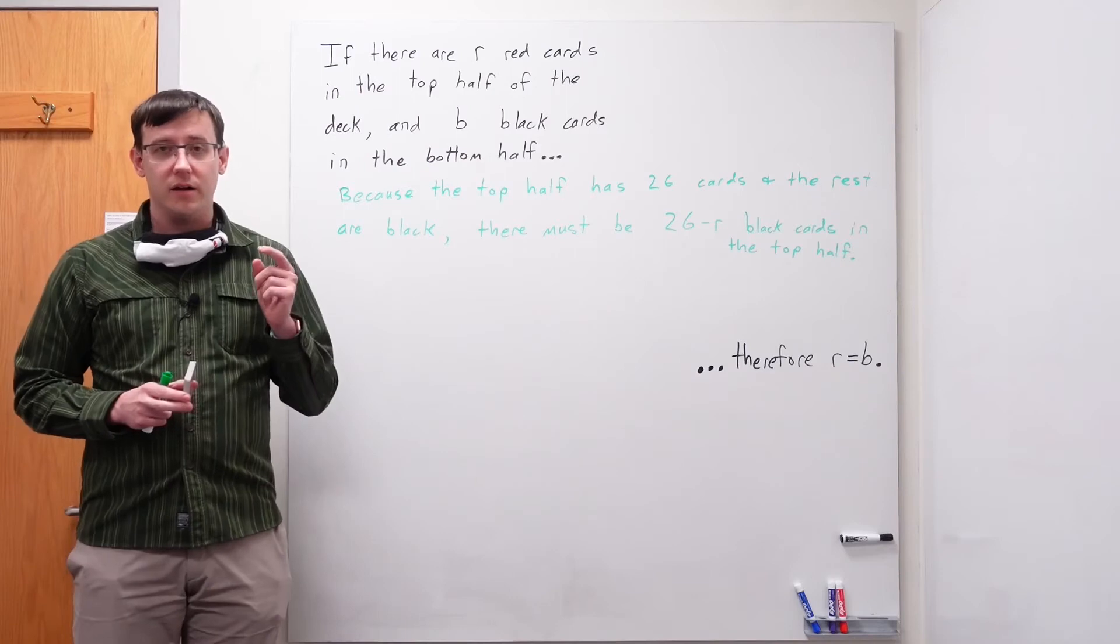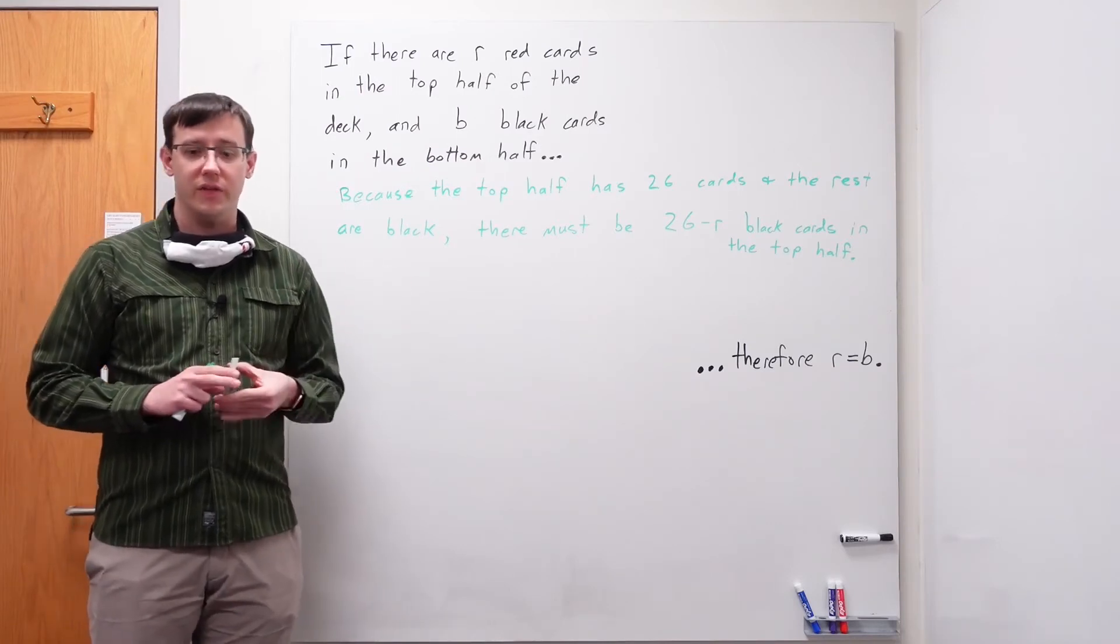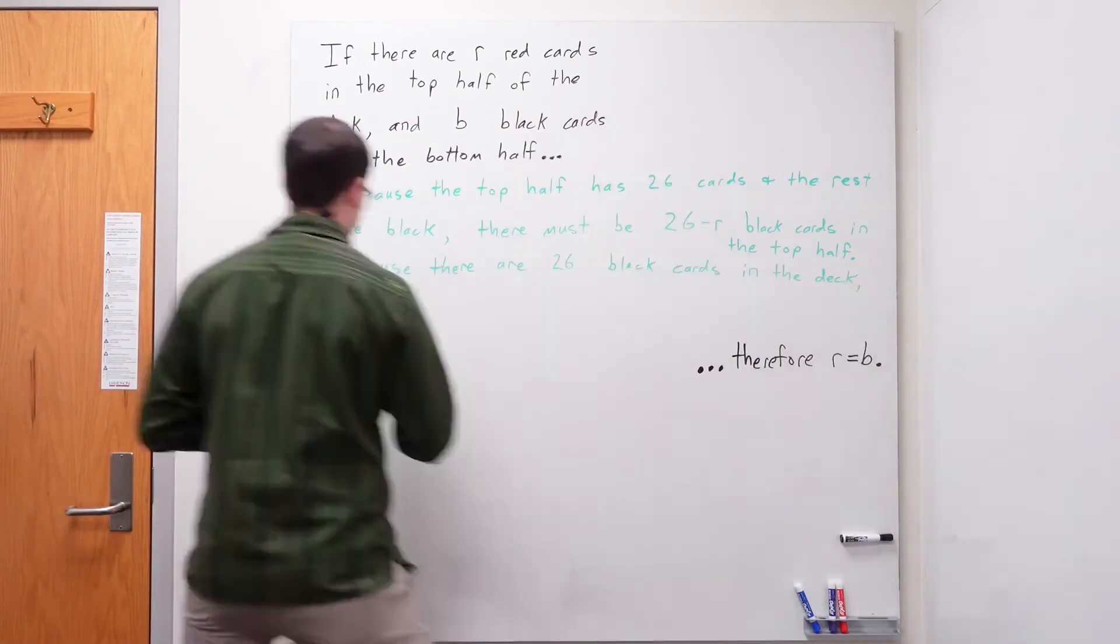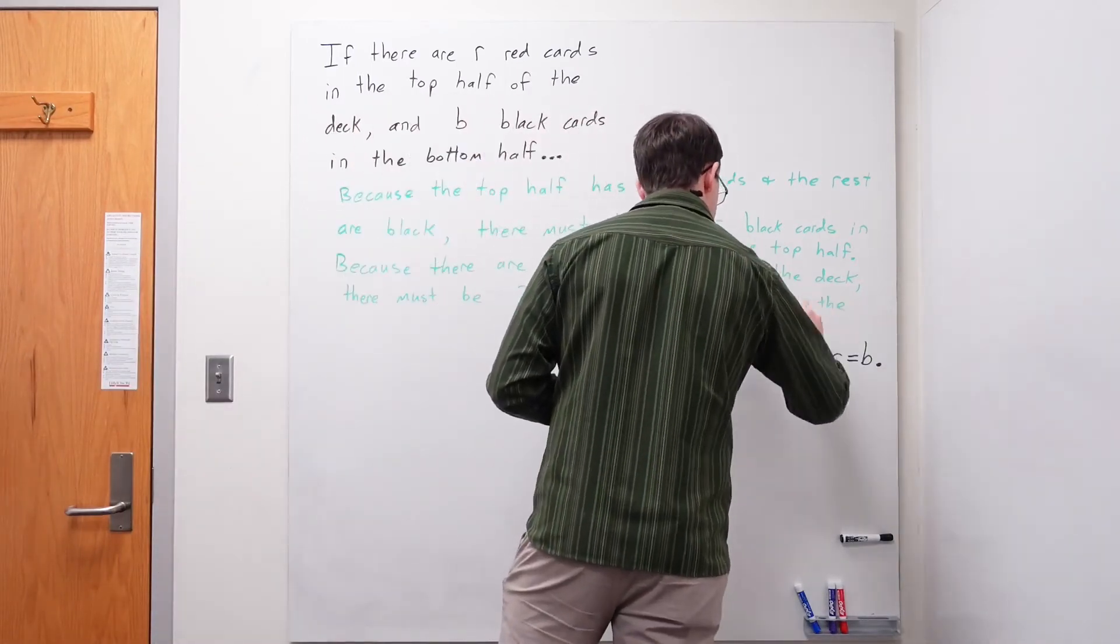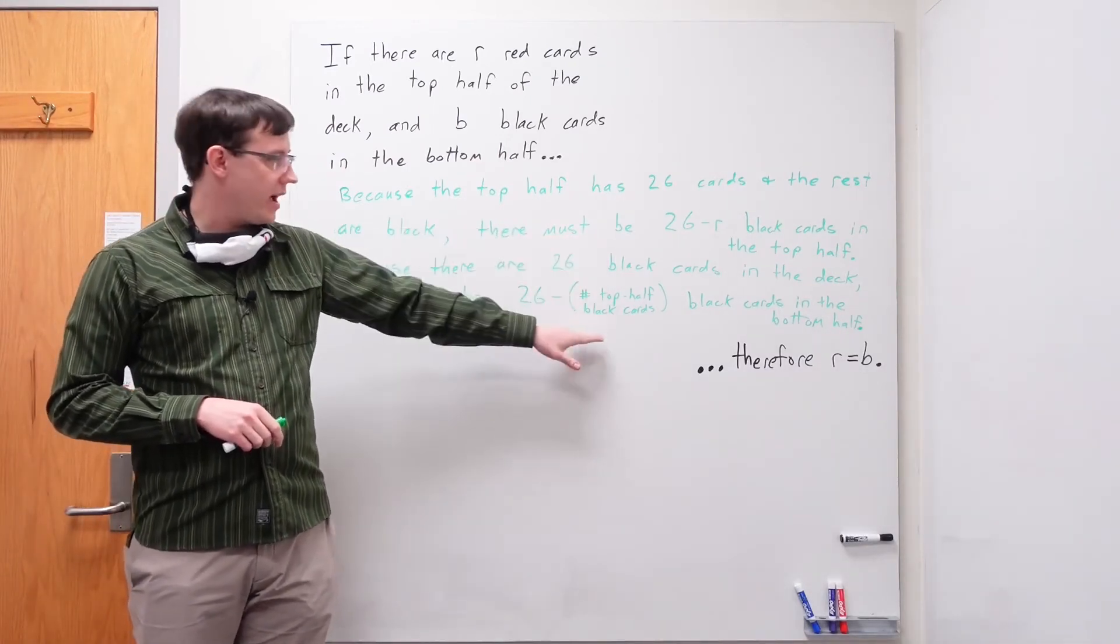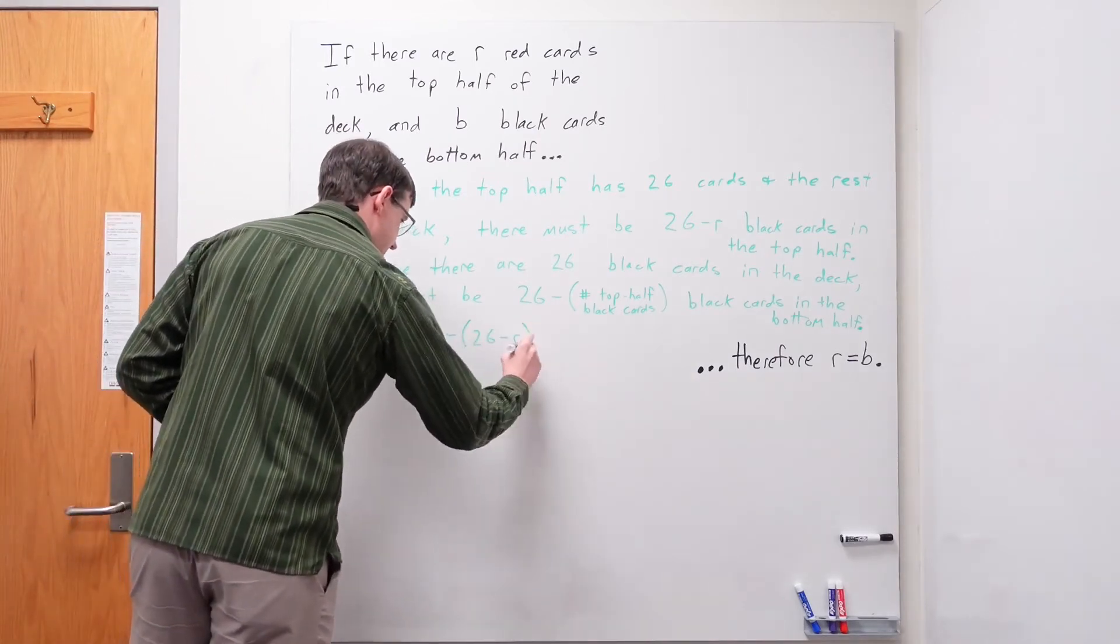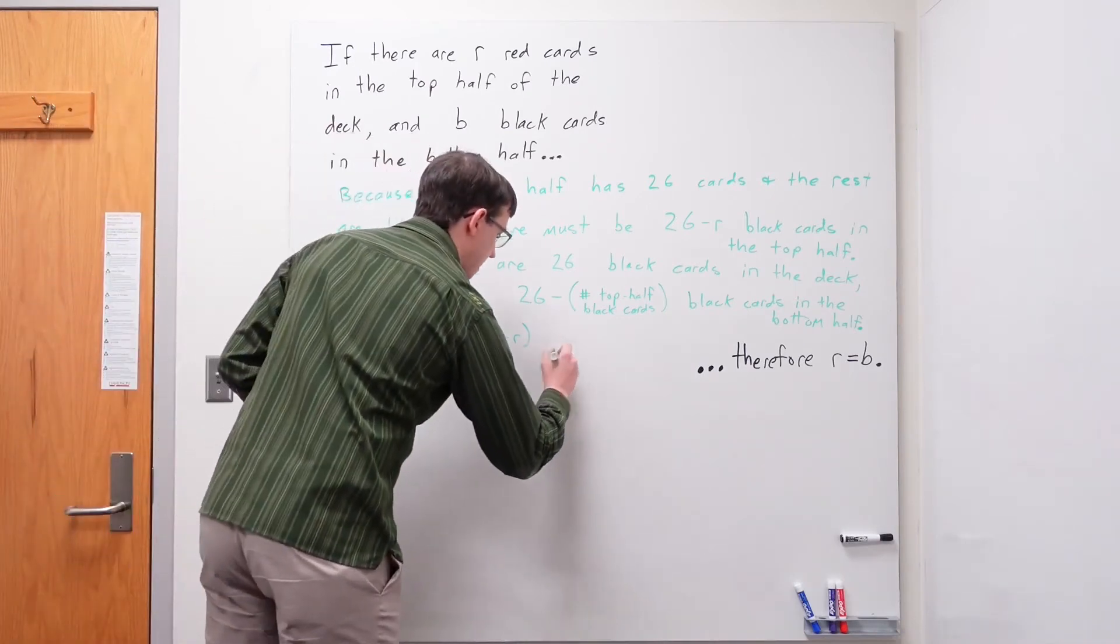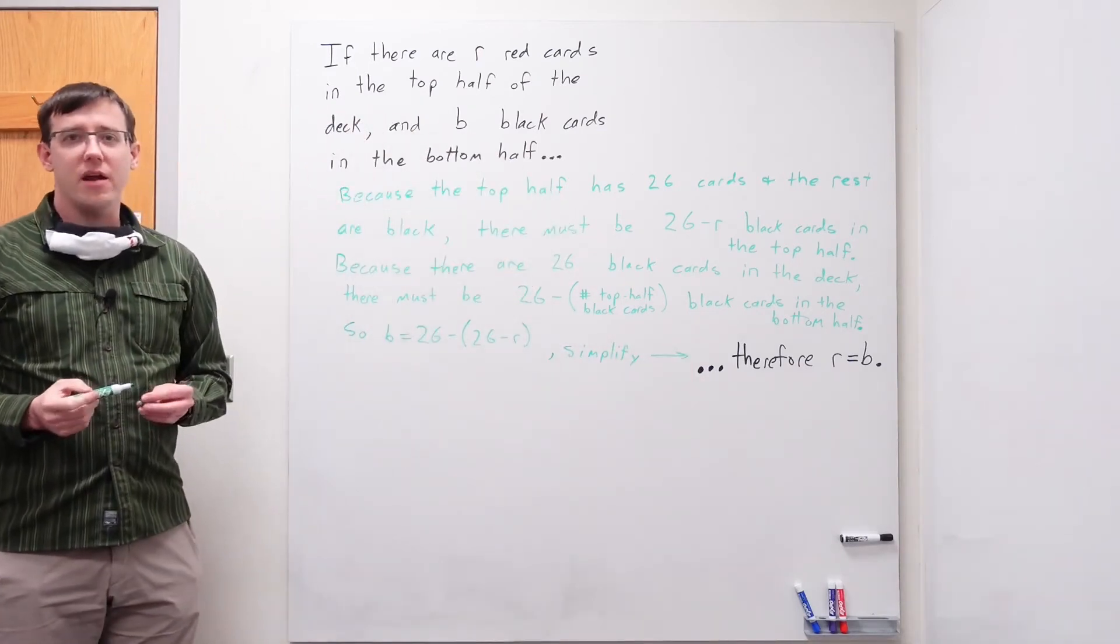So whichever black cards are not in the top half must now be in the bottom half. So the number of black cards in the bottom half must be 26 minus however many were in the top half. And since we just figured out the number of black cards in the top half, we can substitute that here. And now we can simplify and we get that b and r are equal.